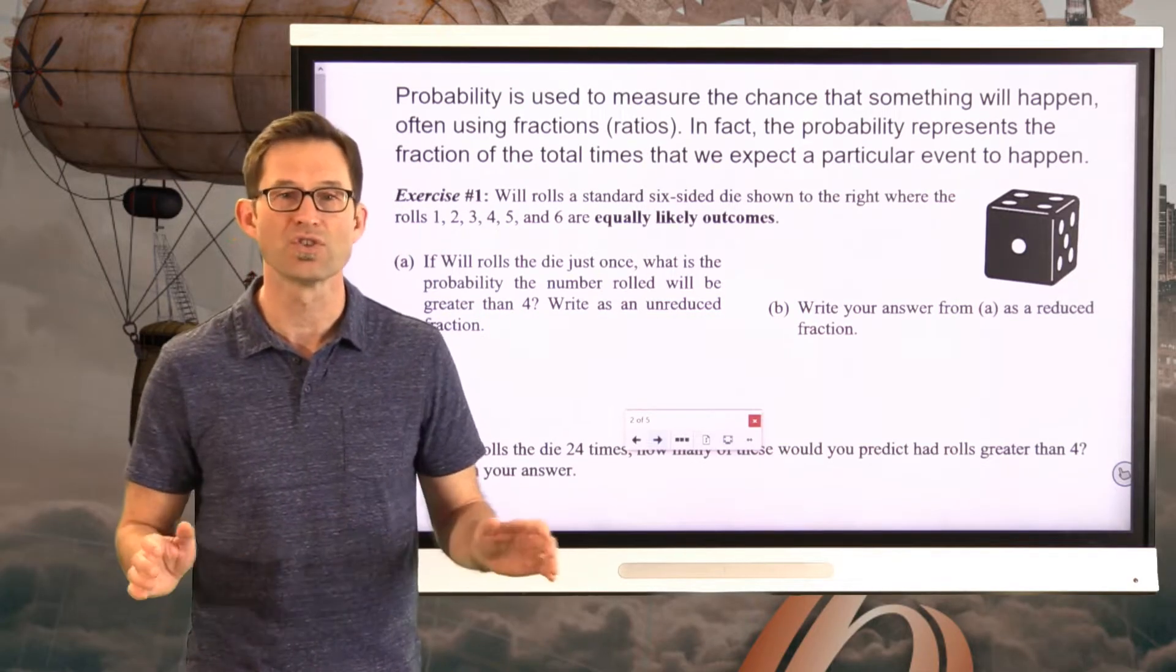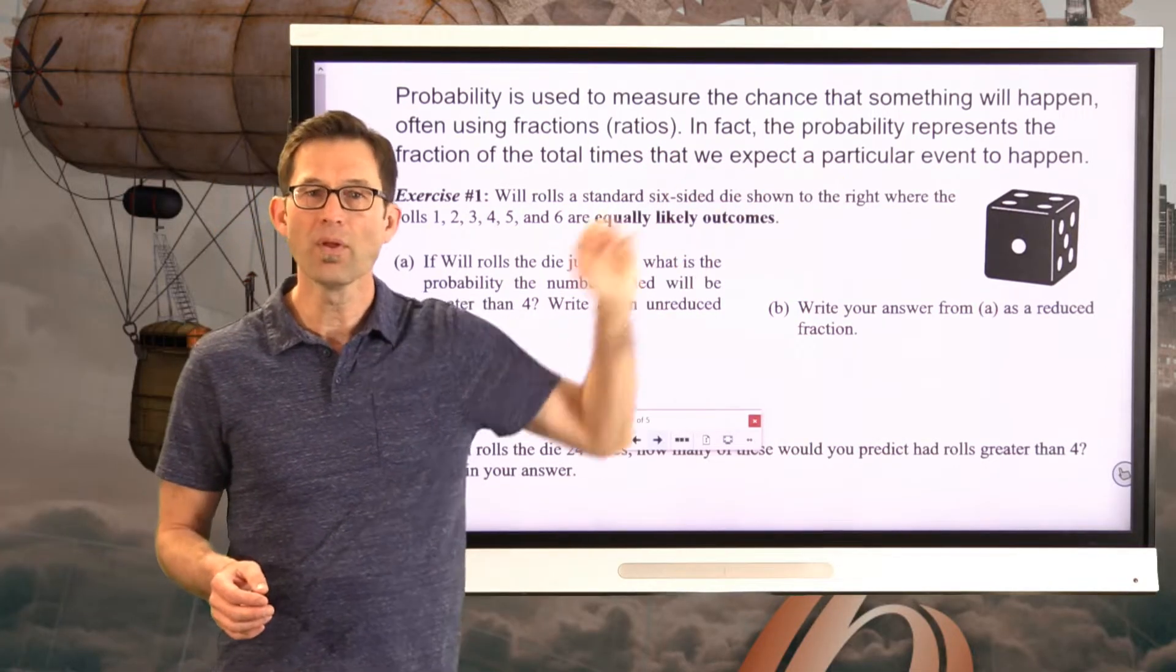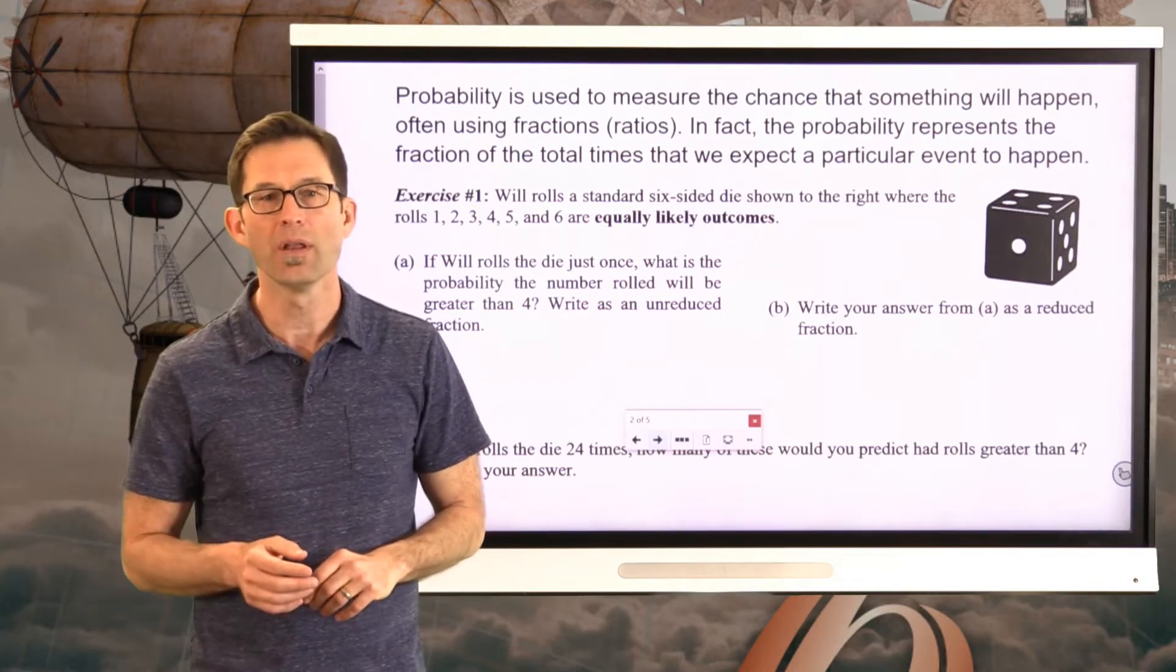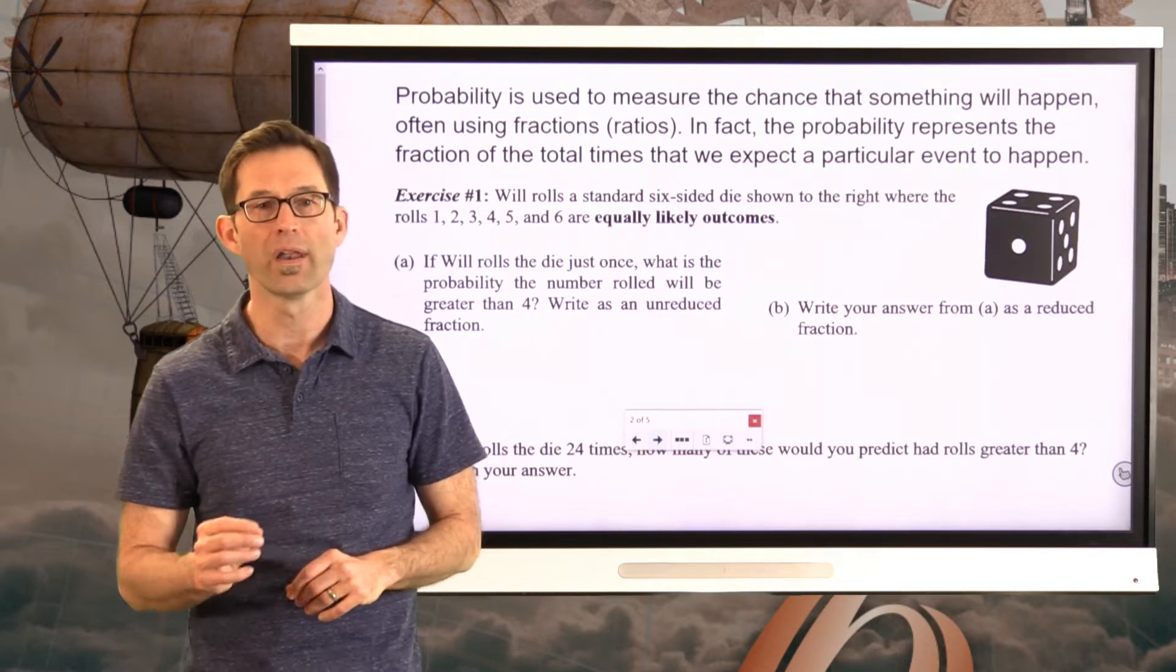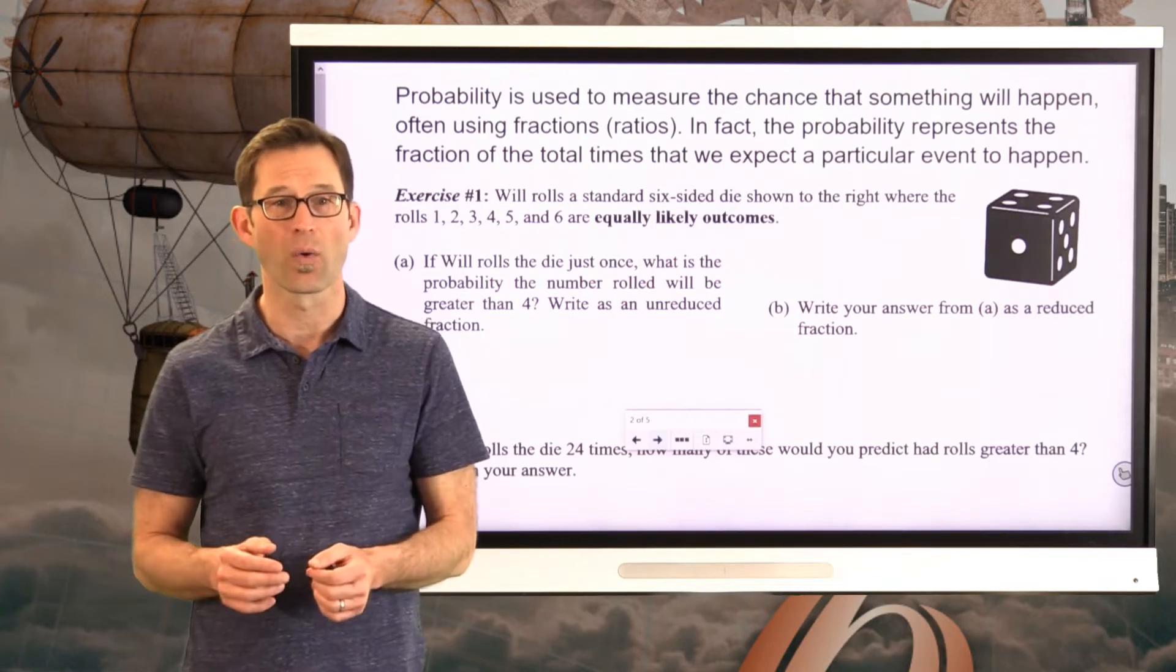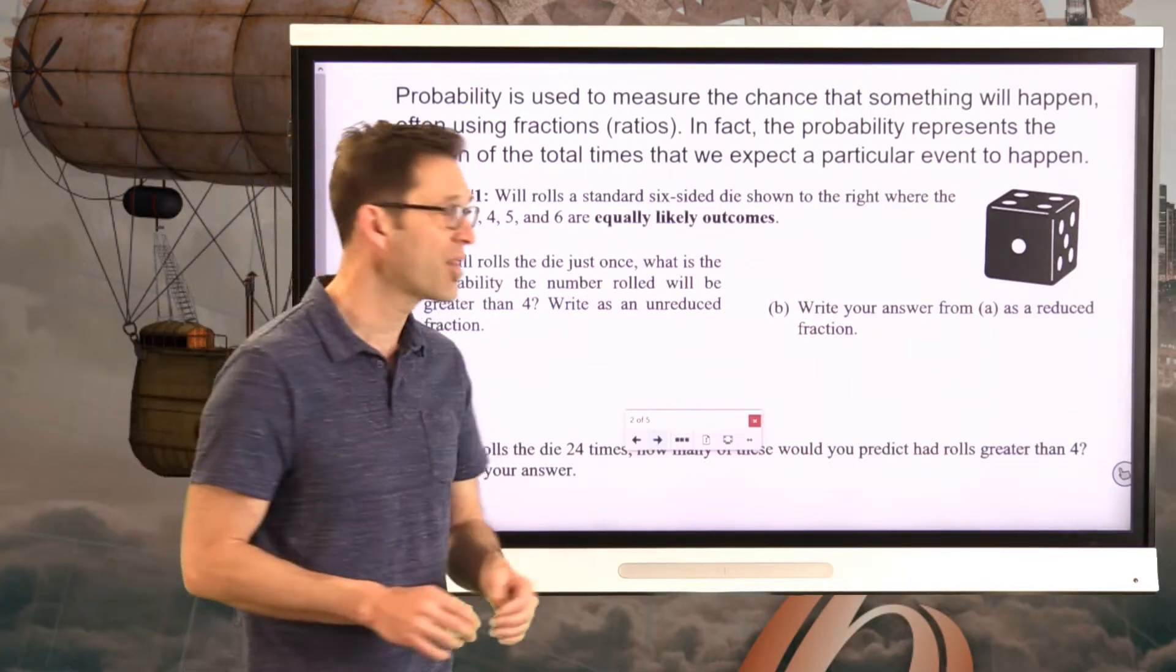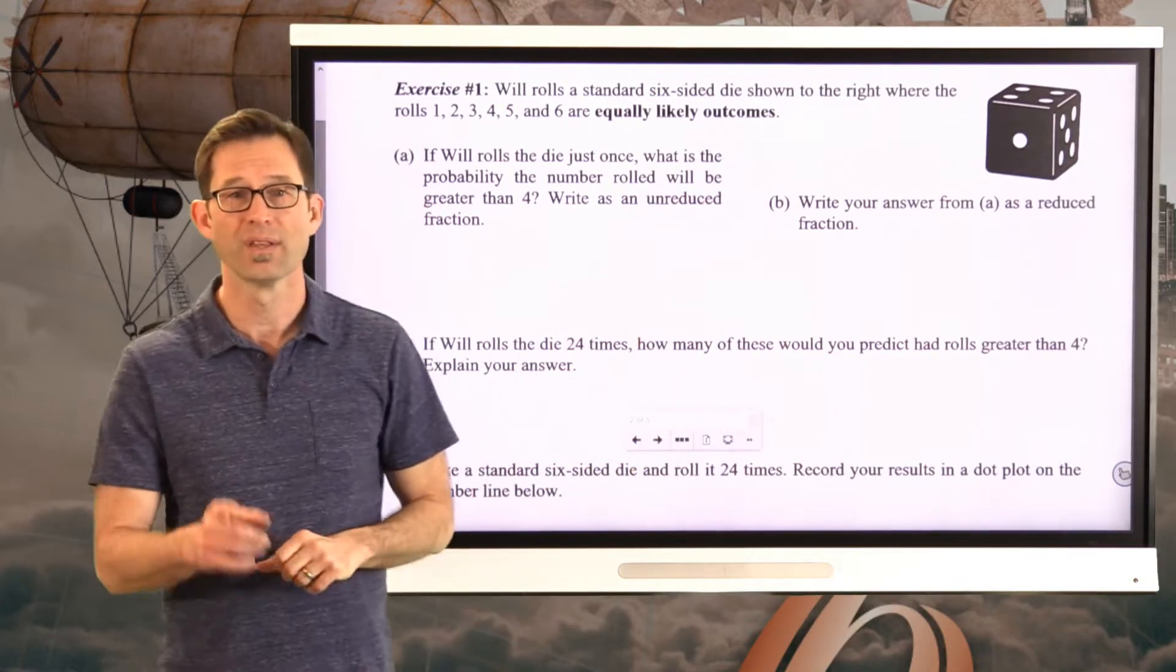Probability is used to measure the chance that something will happen, often using fractions, i.e. ratios. In fact, the probability represents the fraction of the total times that we expect a particular event to happen. We saw how to measure probability using these ratios. We're now going to be using those ratios to try to predict how many times a particular thing happens. Let's do it.